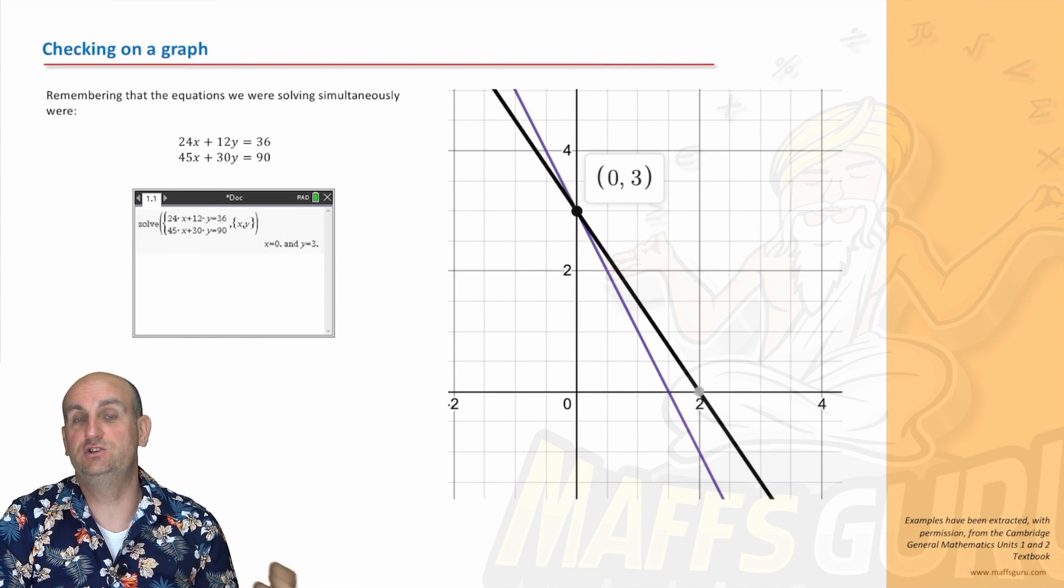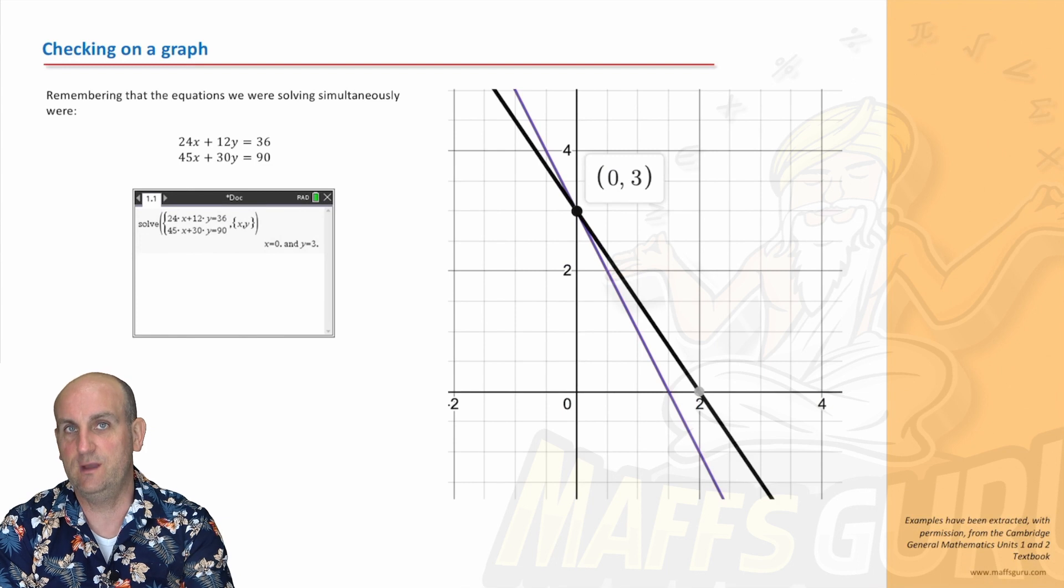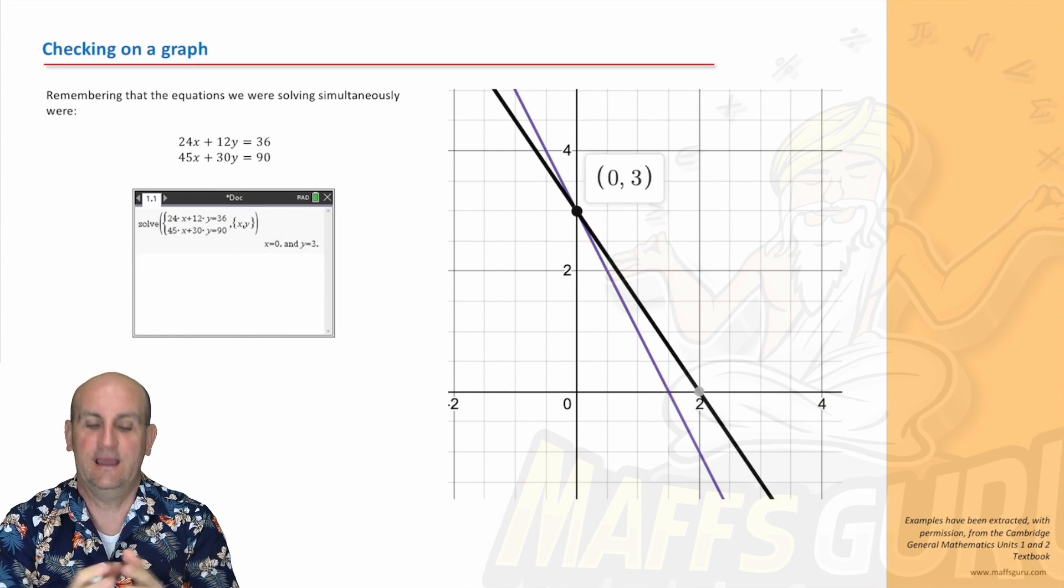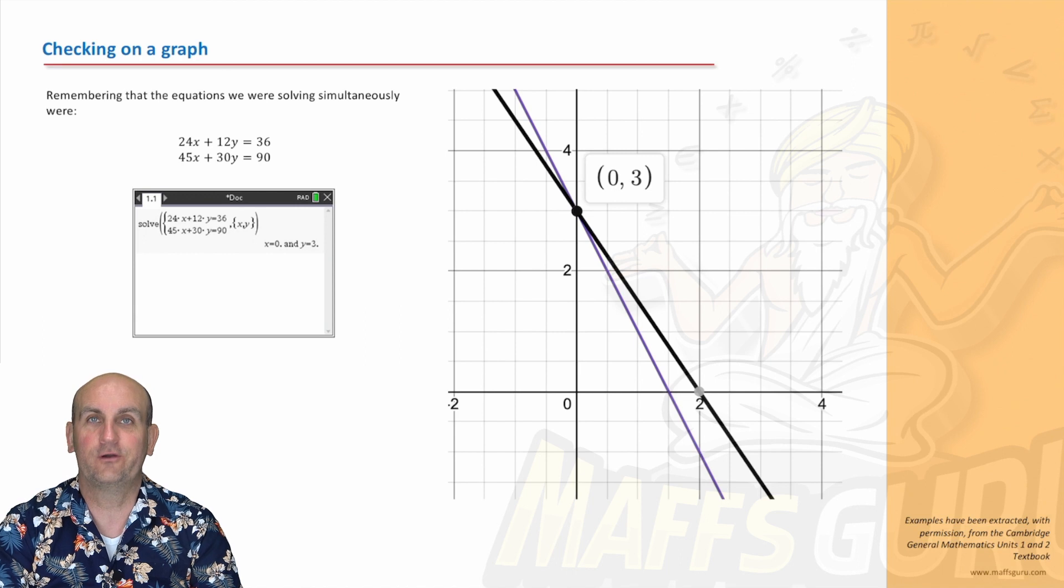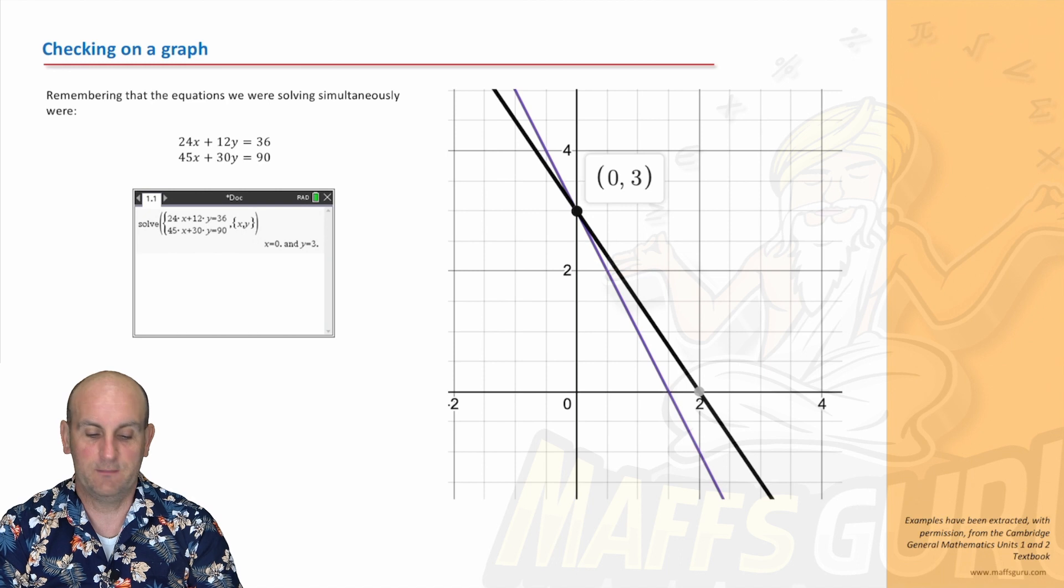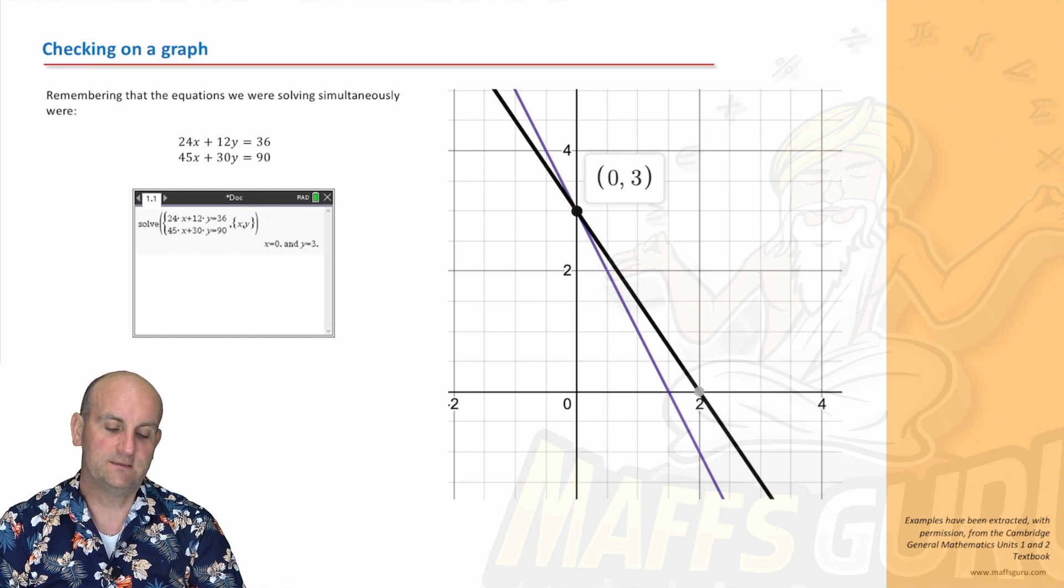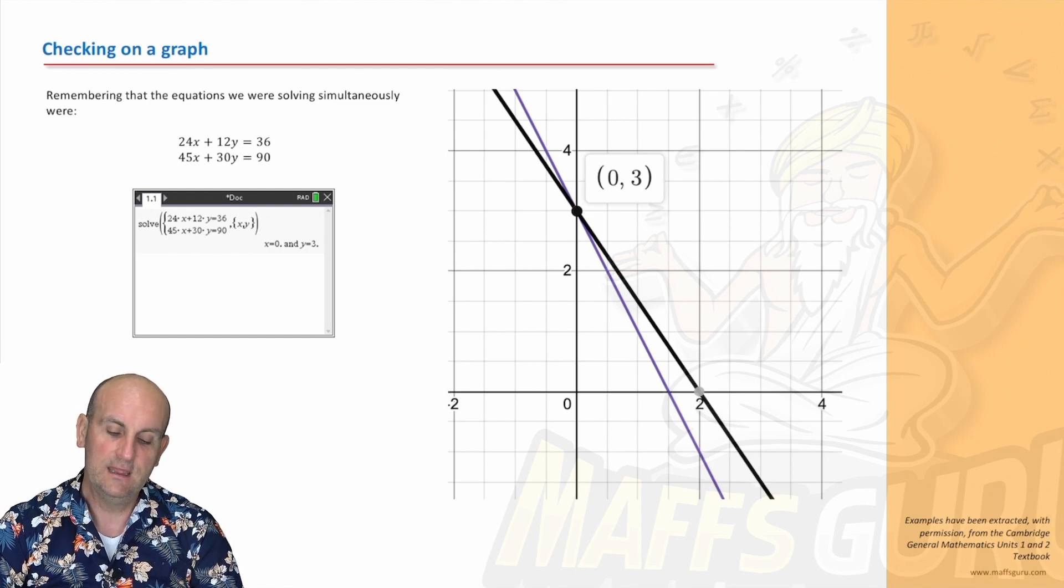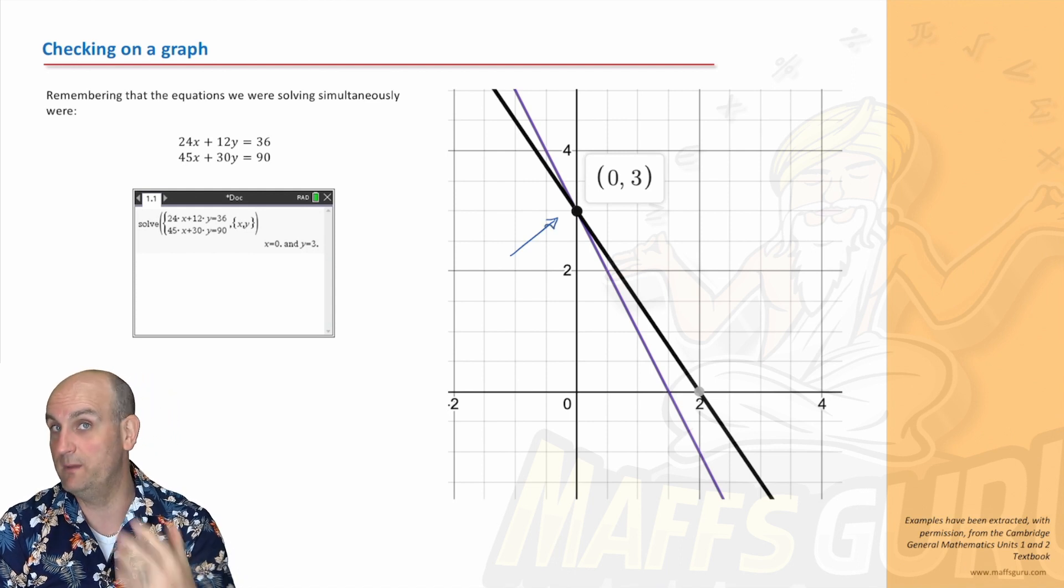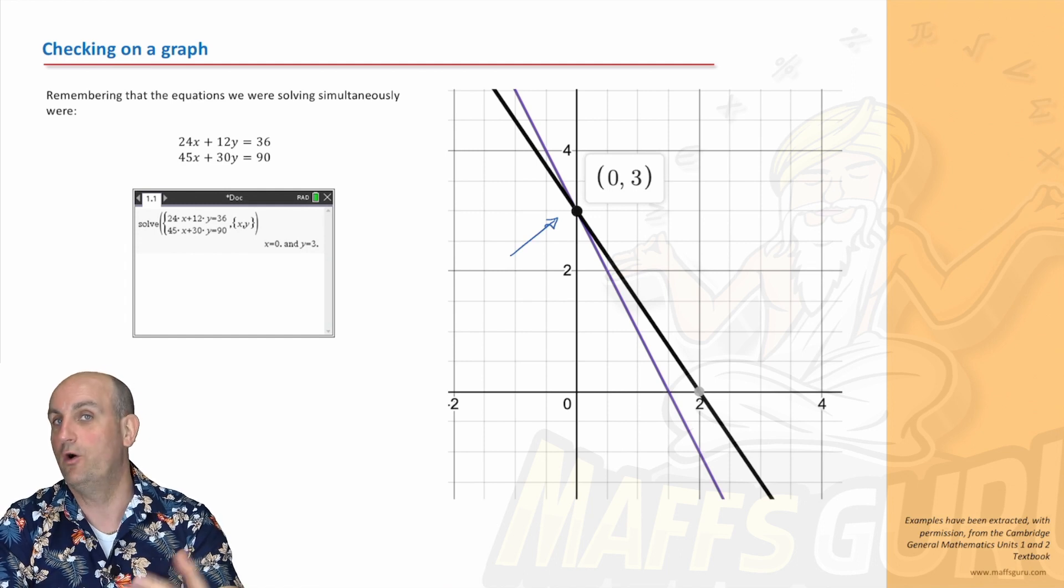Obviously, in this situation, we could then check on the graph to make sure my answer is right. And again, I've shown you how to put these equations into a CAS calculator and solve them. I'm using desmos.com to be able to do this nice and quickly, but you should really get to use your calculator so you become a gun at it. What have I done? I put the two equations in. 24x plus 12y equals 36. 45x plus 30y equals 90. And lo and behold, out comes my solution of 0 comma 3. Because remember, when you're solving these equations, you're doing so to find a point of intersection.